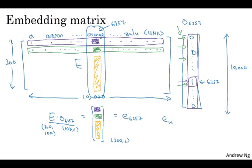E for specific word W, this is going to be the embedding for a word W. And more generally, E times O subscript J, one hot vector with a one at position J. This is going to be EJ, and that's going to be the embedding for word J in the vocabulary.